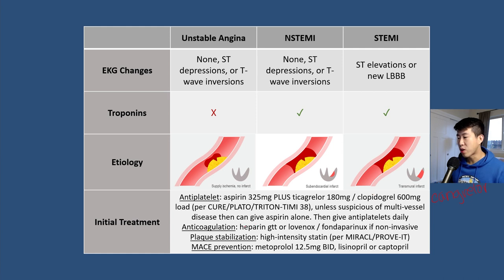Anticoagulation is generally with a heparin drip or Lovenox based on your institution. If you think it's going to be non-invasive management, you can also consider fondaparinux. For plaque stabilization, start all patients on a high-intensity statin per the MIRACLE and PROVE-IT trials. For major adverse cardiac events prevention, start low-dose metoprolol and uptitrate, and you can also start lisinopril or captopril.